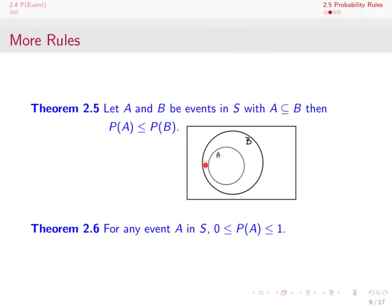Theorem 2.6 states that for any event A in S, the probability of A must be between 0 and 1 inclusive. This follows from axiom 1, which says probability is greater than or equal to 0, and axiom 2, which says the probability of S is 1. Since A is a subset of S, by theorem 2.5, the probability of A is less than or equal to 1.